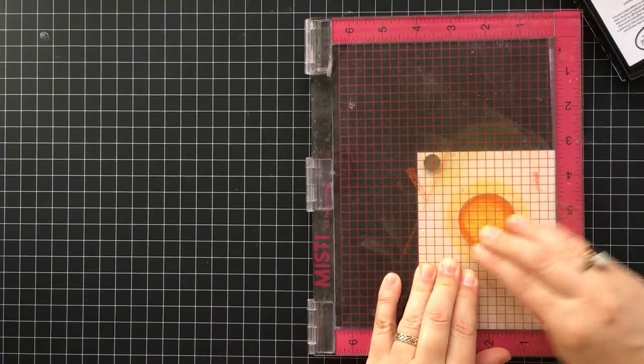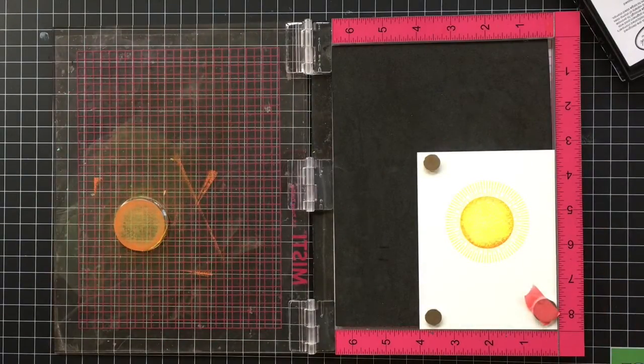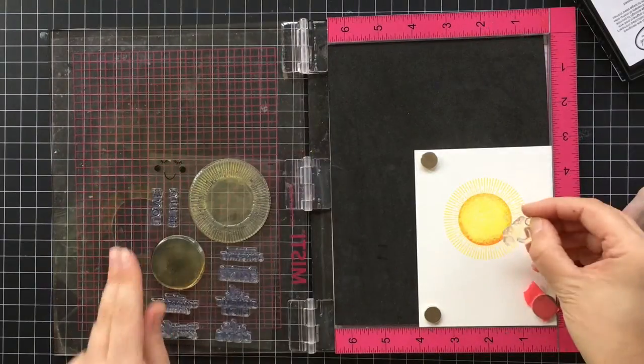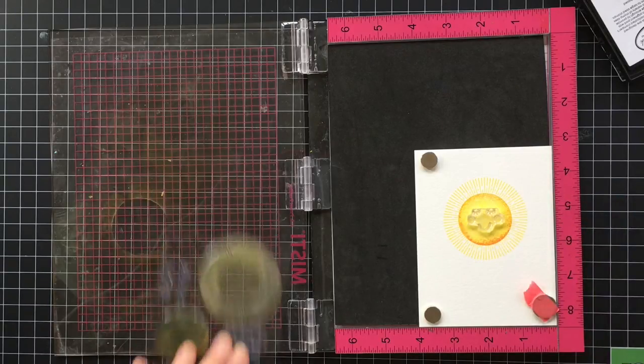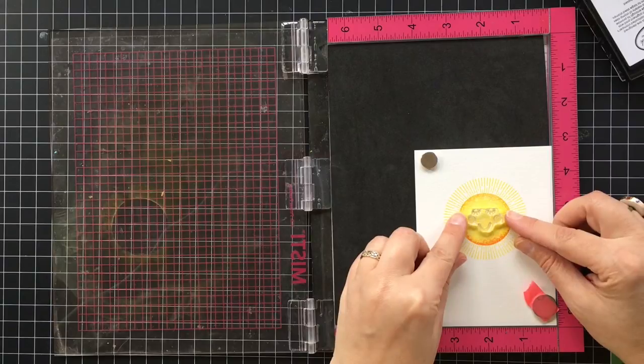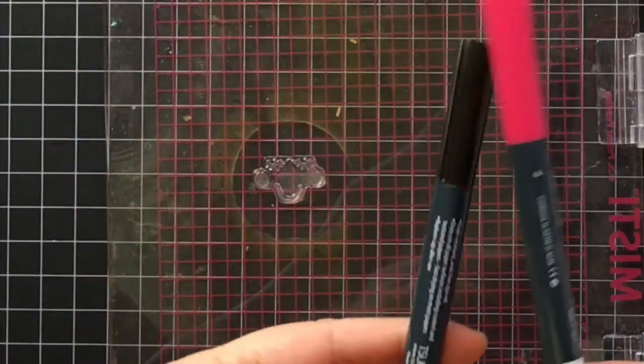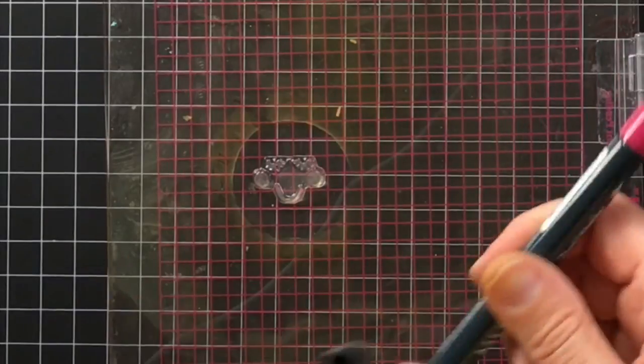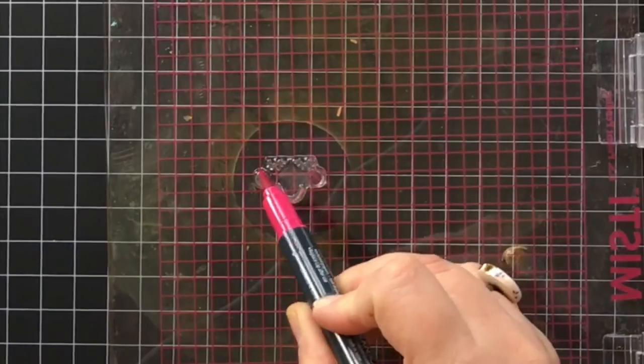Next I'm going to stamp the face of the sun. This time instead of using an ink pad, since the eyes and the smile and the little cheeks are so tiny and I want them to be different colors, I'm going to use markers to add the color and then stamp. There is the pink for the cheeks.